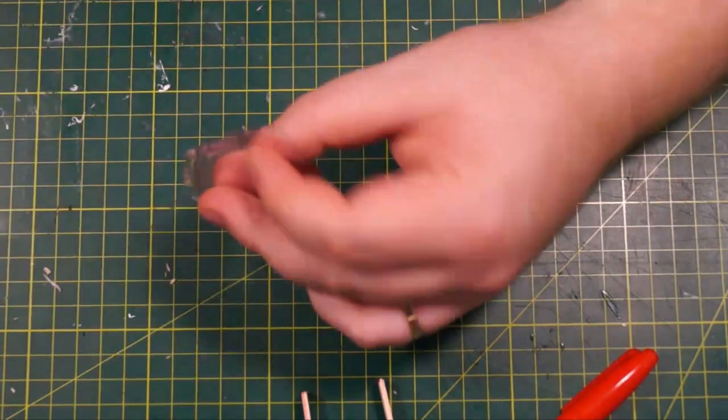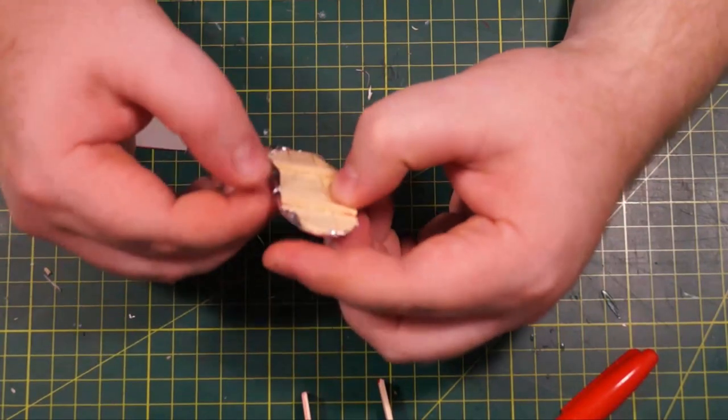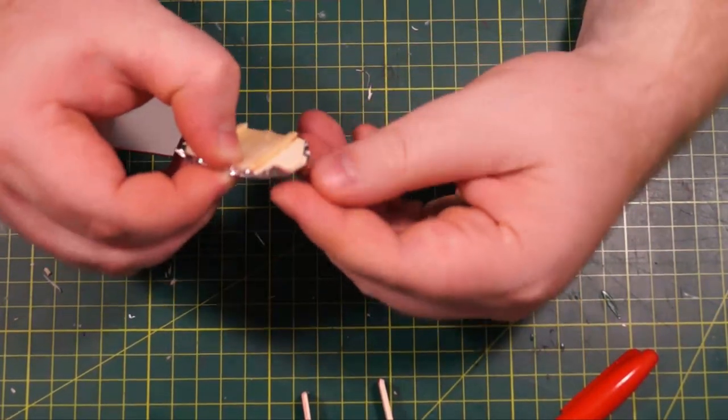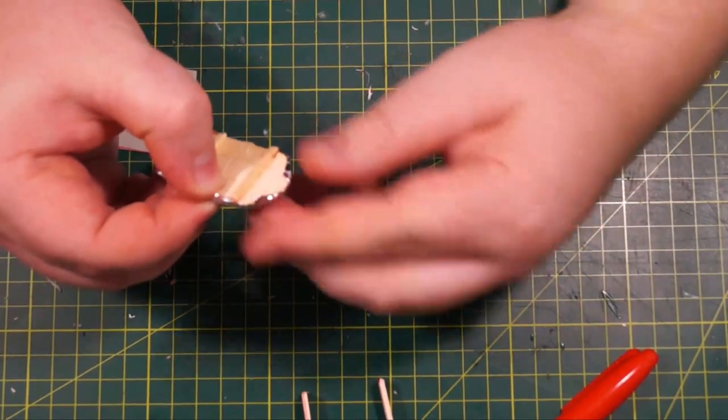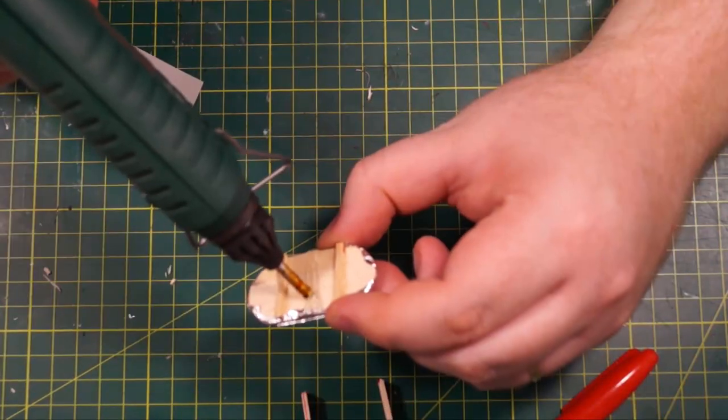you're just going to run it over there for a few seconds to completely flatten it. And then cut off the excess, leaving about two millimeters of foil on each side of the mirror and fold it over the back.